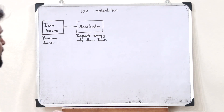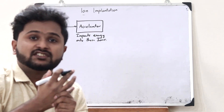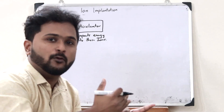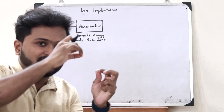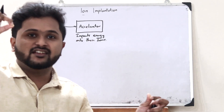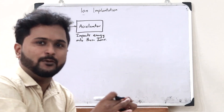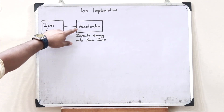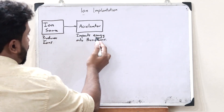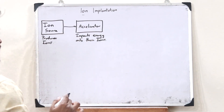Usually, this energy is provided by applying a very high voltage. When a very high voltage is provided, this particular ion beam travels from a very high voltage to ground. A potential difference is created, and because of this potential difference, these ions get accelerated very quickly. Inside the accelerator, these particular ions are provided with very high energy by giving a very high voltage.